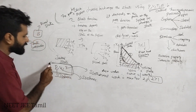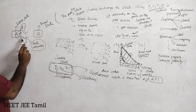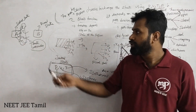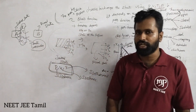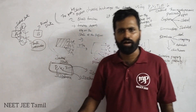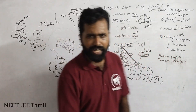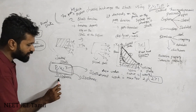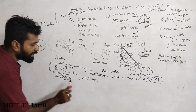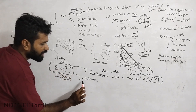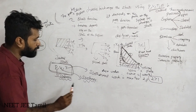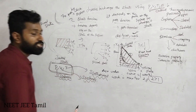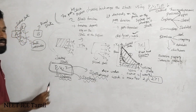Last time I thought about: Pressure, Volume, Temperature, Number of Moles. So if you're in a process, sometimes pressure is constant, temperature is constant, volume is constant. If pressure is constant, the process is isobaric process. If volume is constant, it's isochoric process. If temperature is constant, it's isothermal process. This is very important.